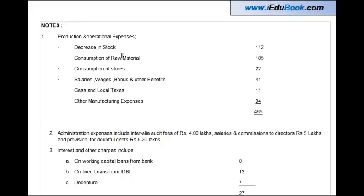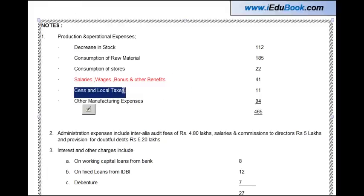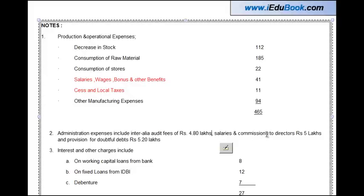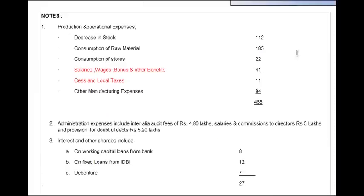The notes say production and operational expenses comprise six items: decrease in stock, consumption of raw material, consumption of stores, salary, wages and other benefits — these are where we need to pay close attention — then local taxes, which are payments to the government, and other manufacturing expenses. Admin expenses include inter alia audit fees of ₹4.8 lakhs, salaries and commission to director ₹5 lakhs, and provision for doubtful debts ₹5.2 lakhs. Interest and other charges include amounts on working capital, fixed loan, and debentures.